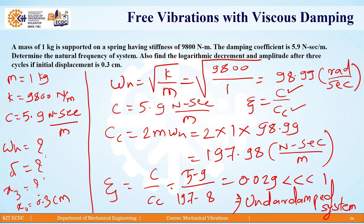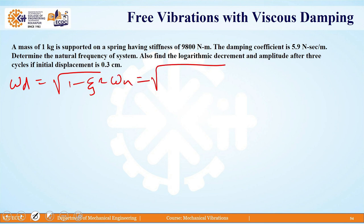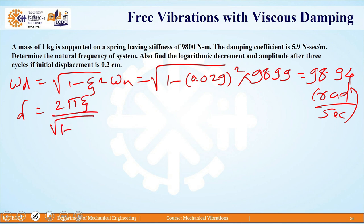This we have already discussed during the theory discussions of free vibrations with viscous damping. For viscous damping systems, we also have a damped natural frequency. The damped frequency ωd is written as under root of (1 minus zeta squared) into ωn. So, under root of (1 minus 0.029 squared) into 98.99 gives ωd as 98.94 radians per second.